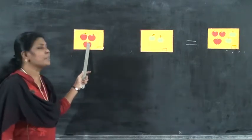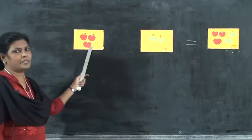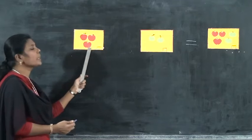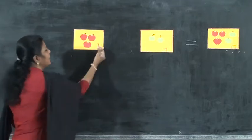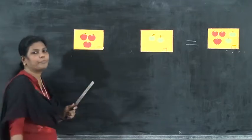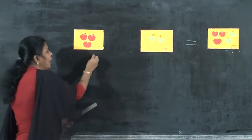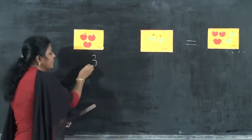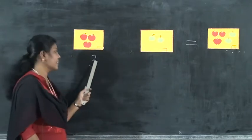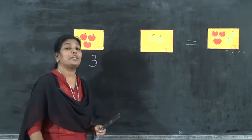How many apples are here? Three apples. One, two, three. Right, in this box, three. Then I will write here, otherwise you can't see. Then what is the sign of addition?